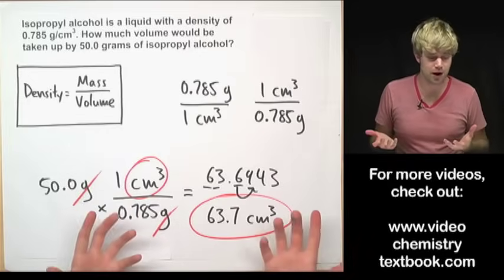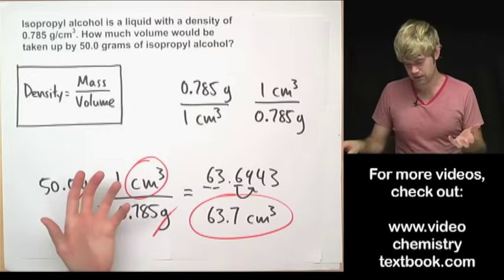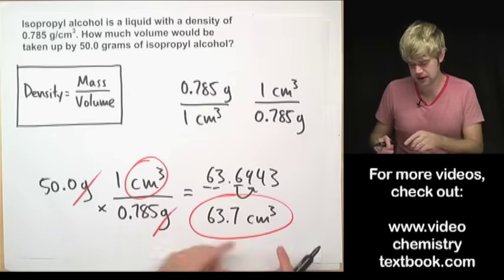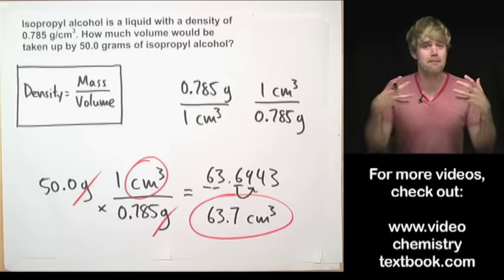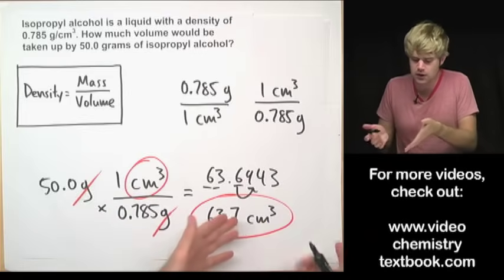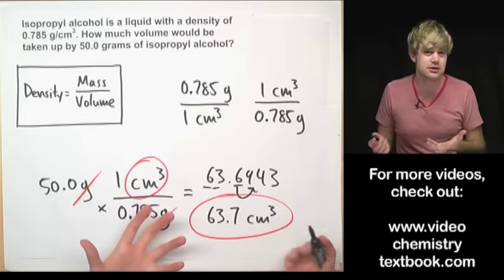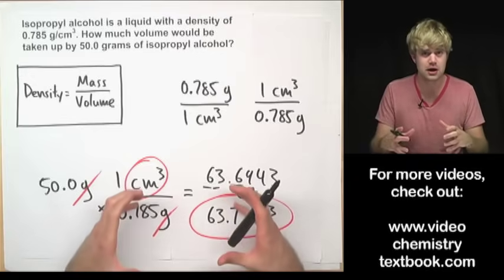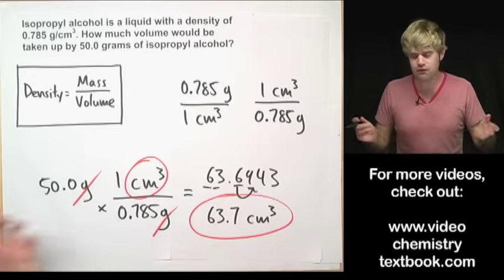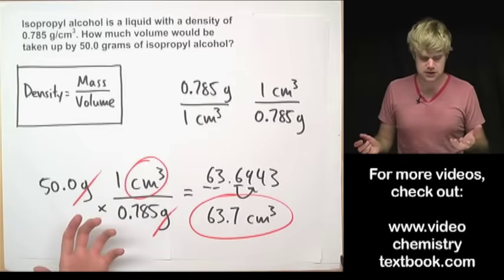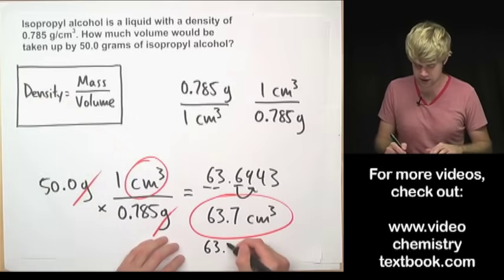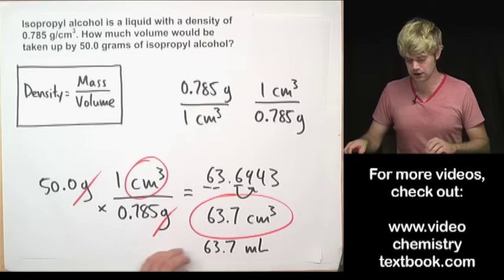Now, isopropyl alcohol, also known as rubbing alcohol, is a liquid, and so for volume of liquid we often measure it in milliliters instead of cubic centimeters. Now milliliters and cubic centimeters are the same thing, it's just that we often use cubic centimeters to talk about the volume of a solid object and we often use milliliters to talk about the volume of a liquid. So if we wanted to be super picky, we might choose to say that the volume of isopropyl alcohol, because it's a liquid, is 63.7 mL, milliliters.